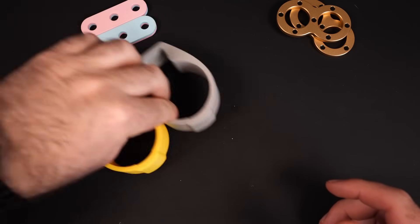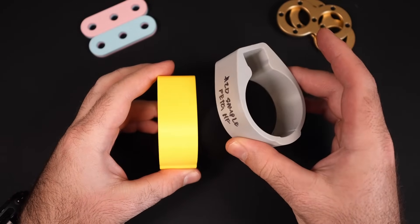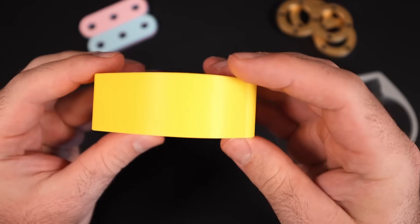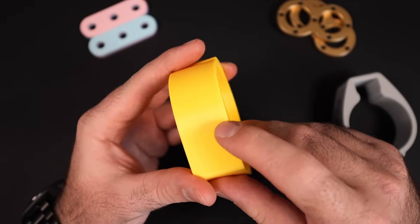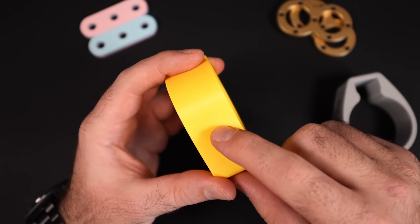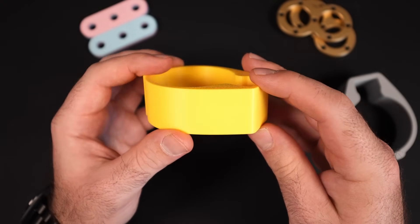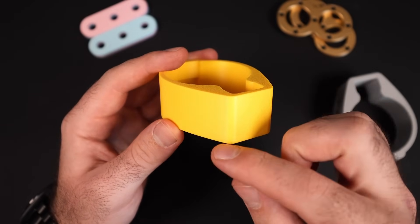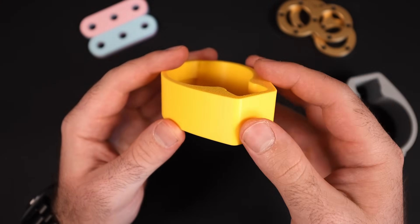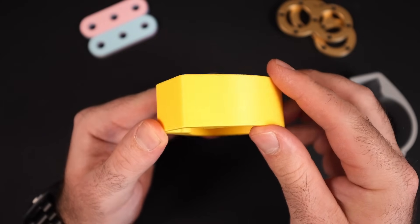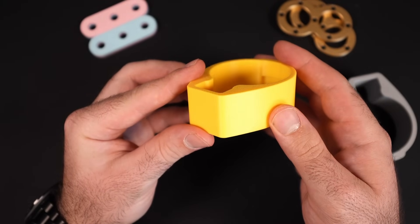Up next we're going to compare the Tesla charging adapters printed on the X1 Carbon and on the H2D. So let's start with the X1 Carbon. Super clean print as expected. There are some small artifacts on the outer surface of the print. There's also some VFAs as well, and that's present because of the belts and the motor vibrations on the X1 Carbon. I wanted to point that out because when we compare this to the H2D, I think you're going to really like the result that we got.